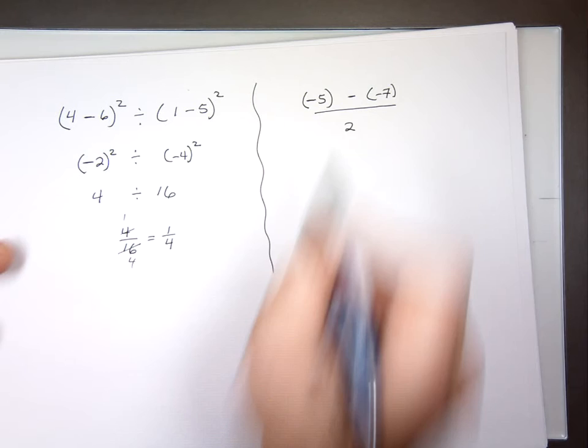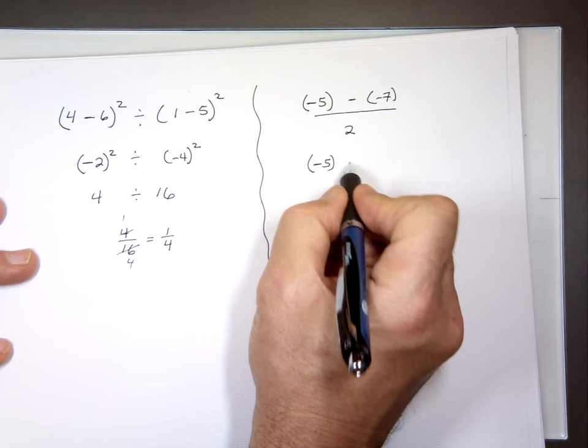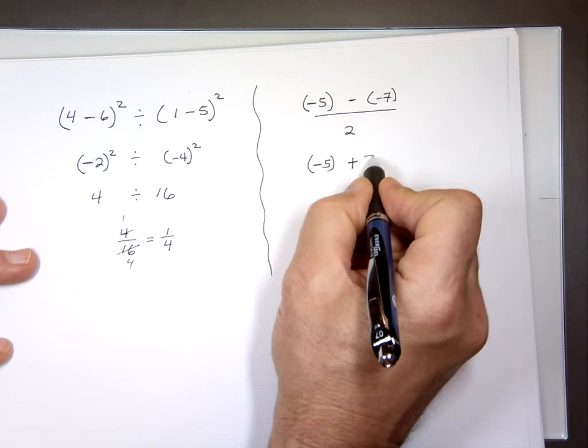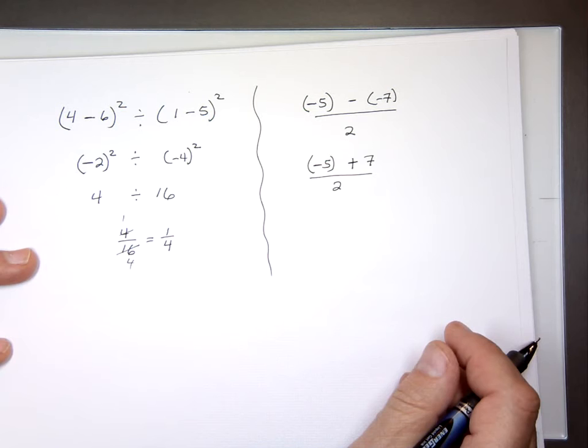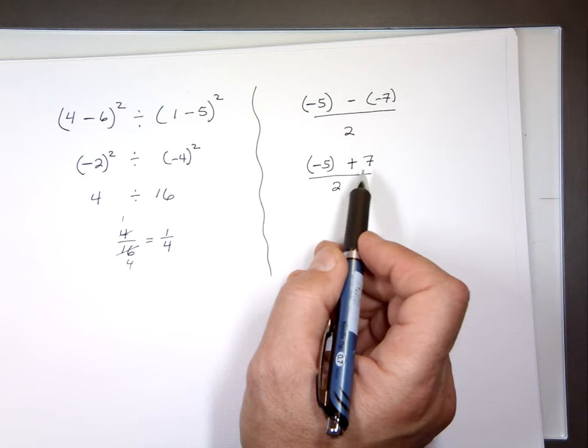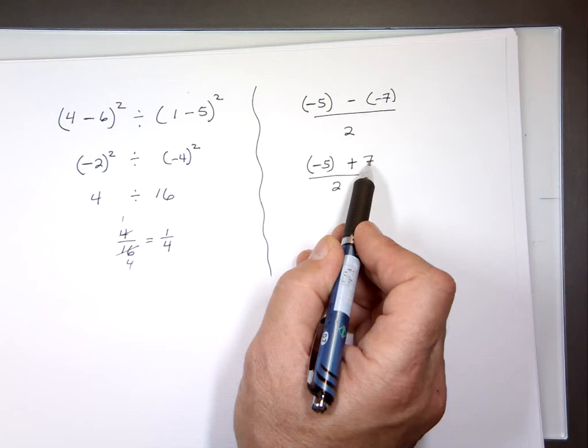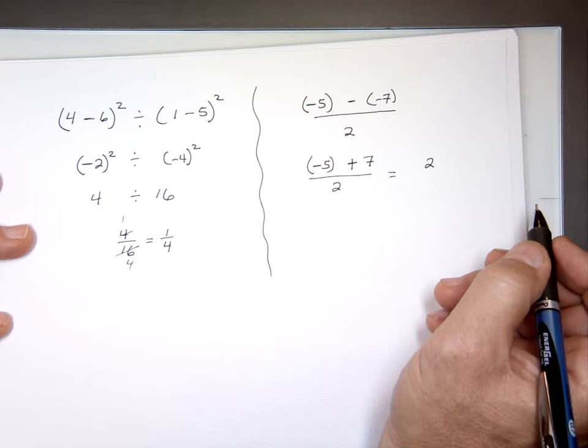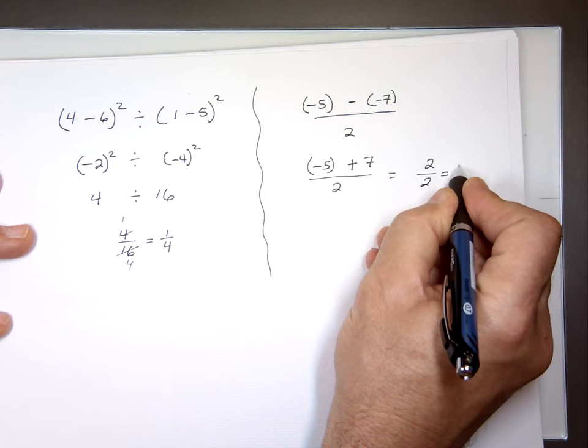Remember, when you have subtraction, you keep the first one, change it to addition, and flip the sign of the second one — that becomes a positive 7. Notice these numbers have different signs, so you subtract the smaller absolute value from the larger. 7 minus 5 is 2, and the sign of the larger is positive. So 2 divided by 2 is 1.